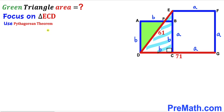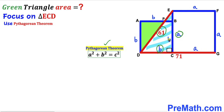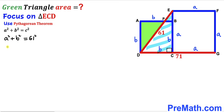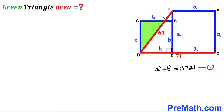We are going to apply the Pythagorean theorem on right triangle ECD. Our theorem is a² + b² = c². In our case the hypotenuse is 61 and the two legs are a and b, so we get a² + b² = 61² = 3,721. I'm going to label this as equation number one.